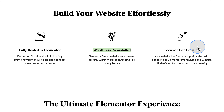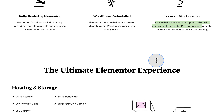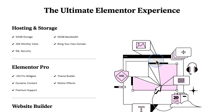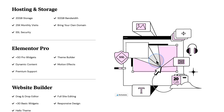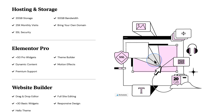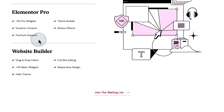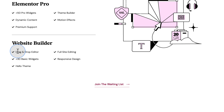The third point is that it's going to be Elementor focused. Here is what you get, currently in beta: 20 gigabytes of storage, 50 gigabytes of bandwidth, 25,000 monthly visits, use your own domain name, SSL security, all the Elementor Pro features, and the website builder feature set — which is basically Elementor Pro. I'm not sure why that's broken out into two separate items. And the Hello theme, which is the Elementor theme, is included.